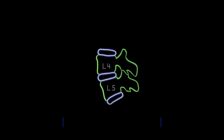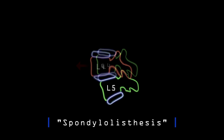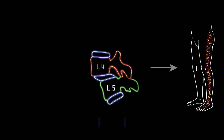One of the most common conditions that I see in my clinical practice is called spondylolisthesis. Spondylolisthesis simply means that two vertebrae in the spine have slipped over each other, and this can cause low back pain radiating into the legs.